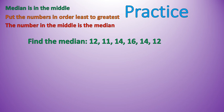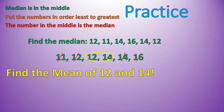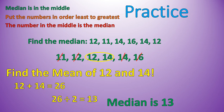Here's a practice question with an even-numbered list. Find the median of 12, 11, 14, 16, 14, 12. Put them in order: 11, 12, 12, 14, 14, 16. Working into the center, we need to find the mean of 12 and 14. 12 plus 14 is 26, divided by 2 gives us 13. Therefore, the median of this list is 13. And it should make sense — right between 12 and 14 is 13.